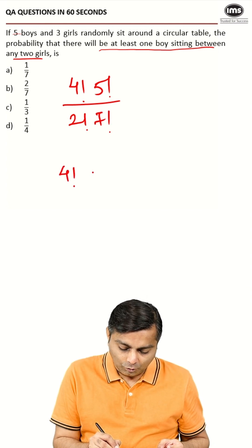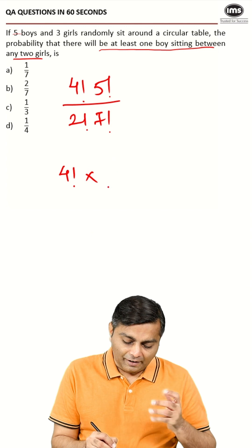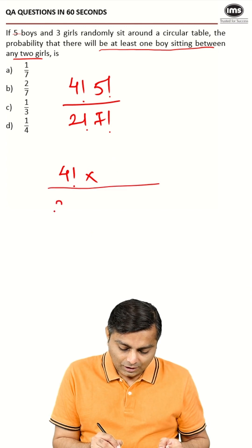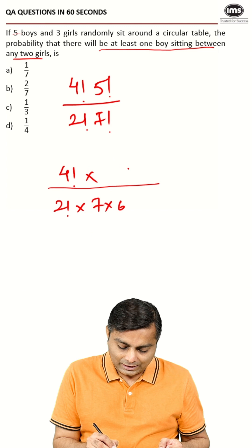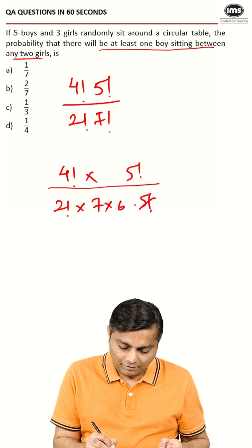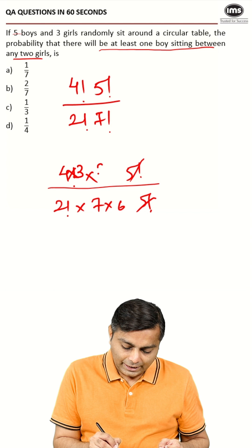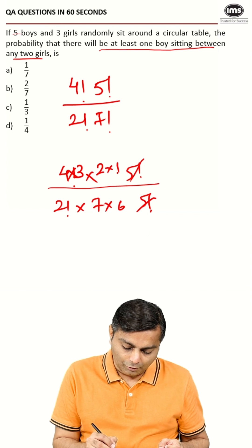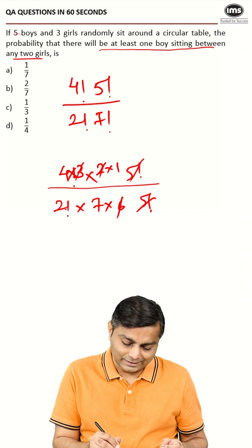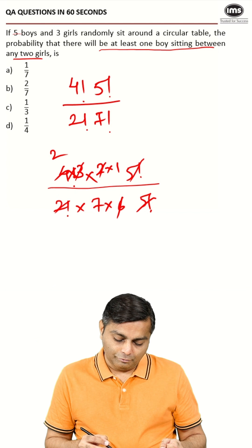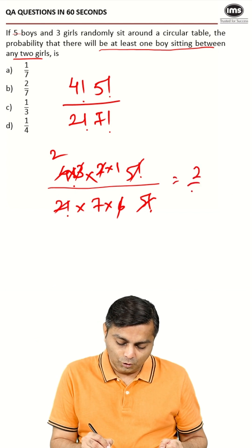This is going to become 4 factorial times 5 factorial. The whole thing can be cancelled off. It will be 2 factorial and 7 and 6. We can cancel 5 factorial and 5 factorial here. So this is 4 times 3 times 2 times 1. So 2 and 3 will cancel out 6. 2 will cancel out 4. So your final answer is going to be 2 by 7.